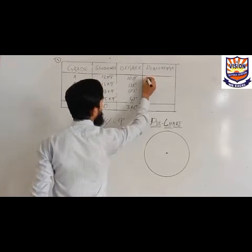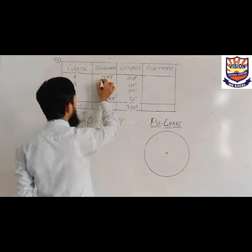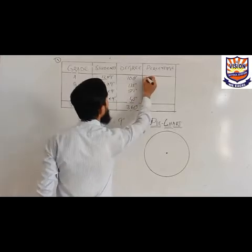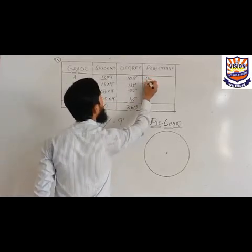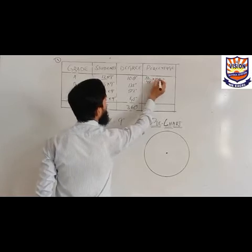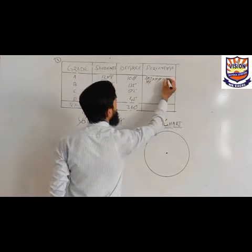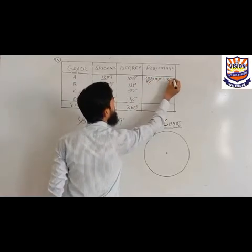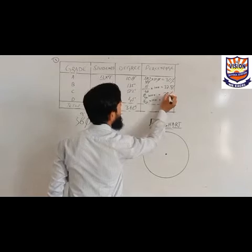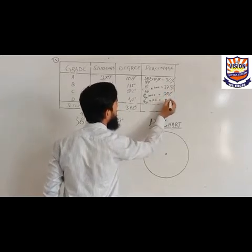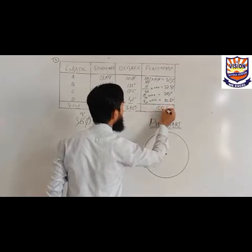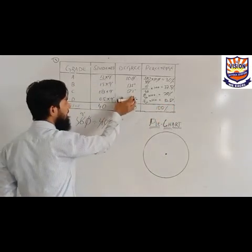Now calculate the percentage. As we know, the formula to calculate percentage is: part divided by whole, multiplied by 100. So the part is 12 for grade A students, and the total is 40. 12 divided by 40 multiplied by 100 equals 30 percent — 30 percent of the students got grade A. Similarly, this gives us 37.5 percent, 20 percent, and 12.5 percent, totaling 100 percent.